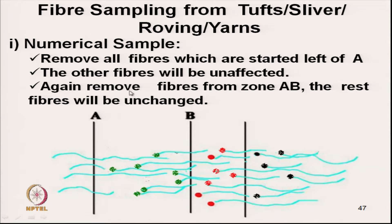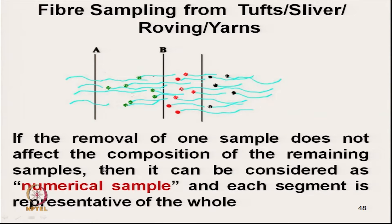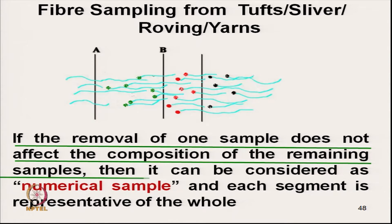Removal of all fibres starting at the left side of A — if we remove them, the other fibres will be unaffected. Again, removal of fibres from the AB zone, that is fibres with green tip, will not affect the fibres with red tip or black tip. So the definition of numerical sampling is: if the removal of one sample does not affect the composition of the remaining sample, then it can be considered a numerical sample. Each segment is representative of the whole lot.